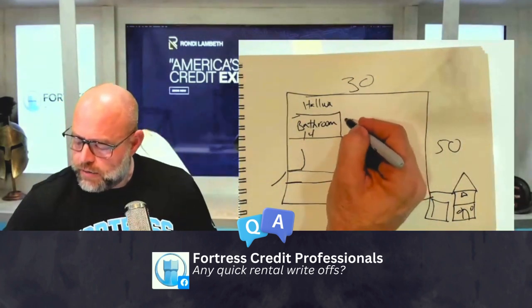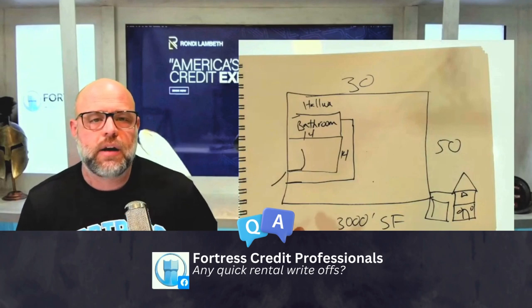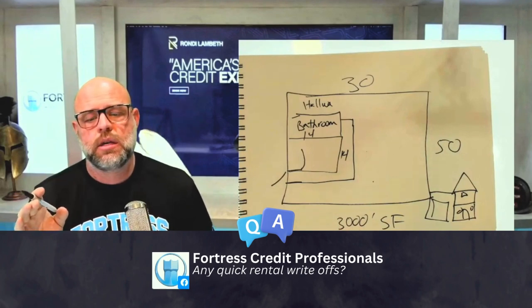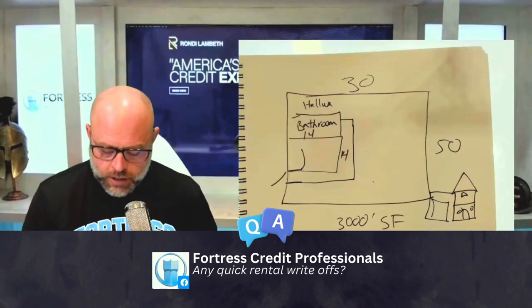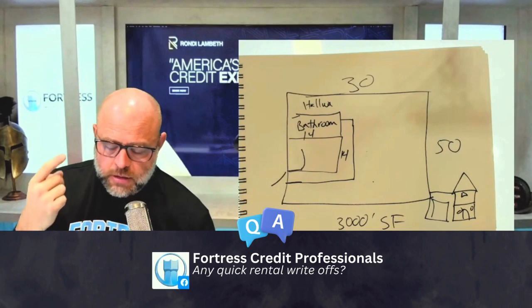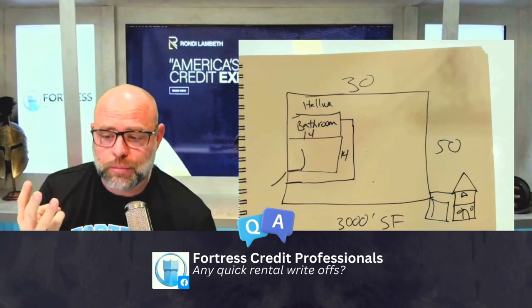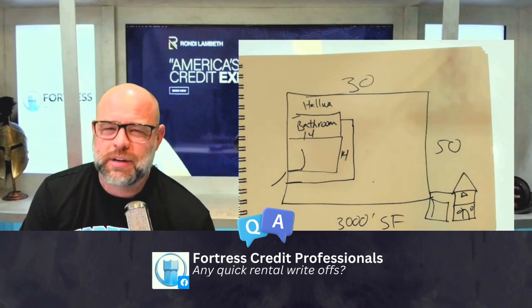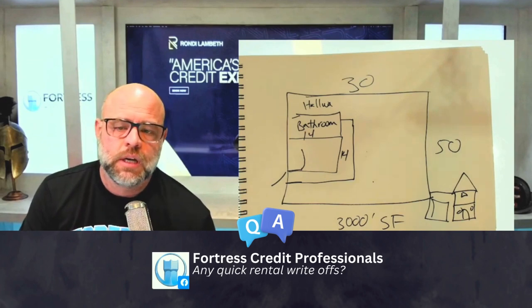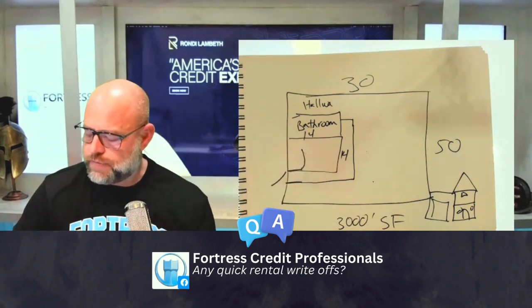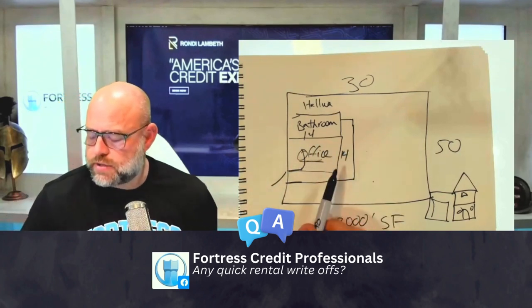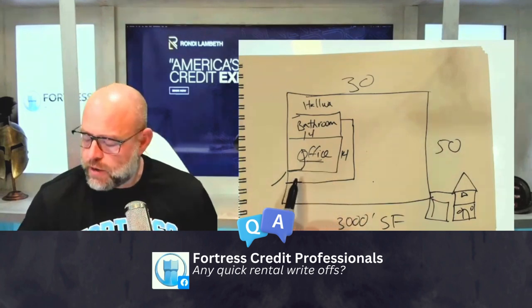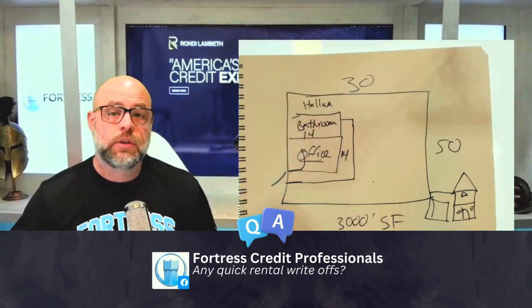So the IRS tax code allows you to write off a percentage of what you spend on rent, on electricity, on internet, on cleaning fees, landscaping fees, garbage, water bill — whatever else you spend on a house. So if you're a renter and you're using this office for business purposes, then you can write off the square footage of this house for the percentage of it.